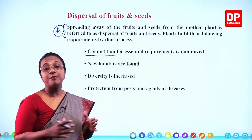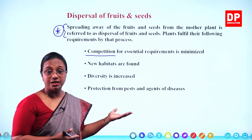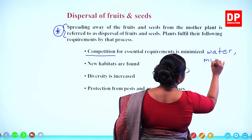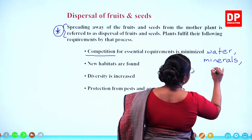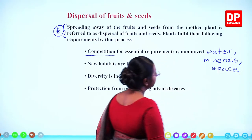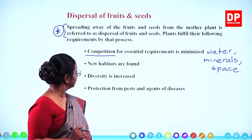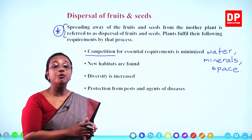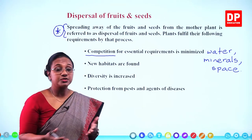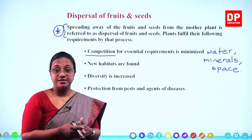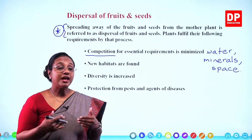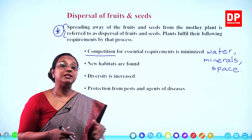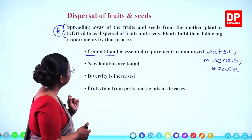The more seeds go away from the mother plant, the more competition for water, minerals, and space is reduced. They can also find new habitats. For example, if you have a mango tree in your home garden and all the seeds start to grow there, you will have too many mango trees. But if they get dispersed to another place, they will find a new habitat where they can grow successfully.